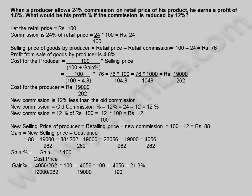Gain percentage = (gain / cost price) × 100 = (4056/262) / (19000/262) × 100 = 4056/19000 × 100 = 21.3%. The profit percentage of the producer if he reduces the commission by 12% is 21.3%.